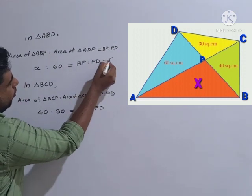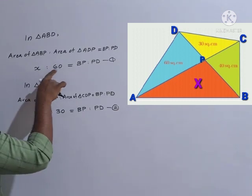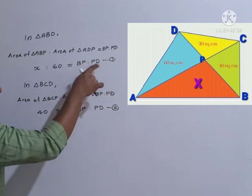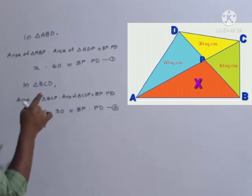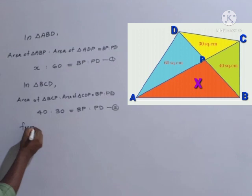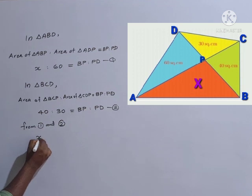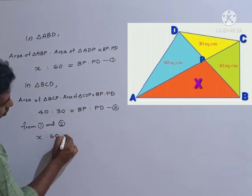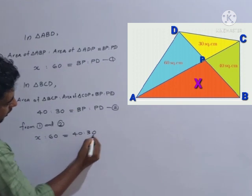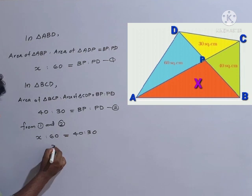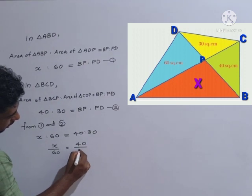From equation one and equation two: x is to 60 equals BP to PD, and 40 is to 30 equals BP to PD. Therefore x to 60 equals 40 to 30. Writing this in fraction form: x divided by 60 equals 40 divided by 30.